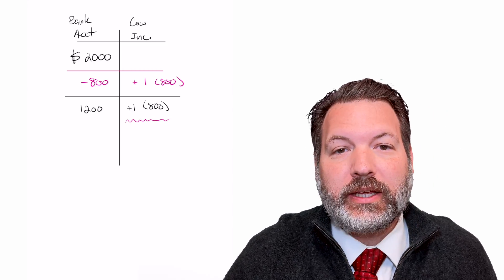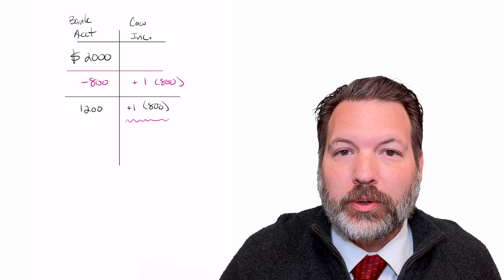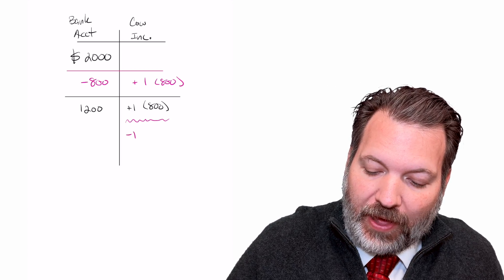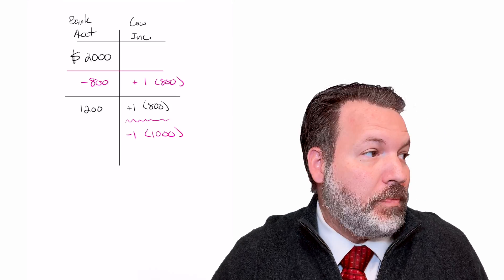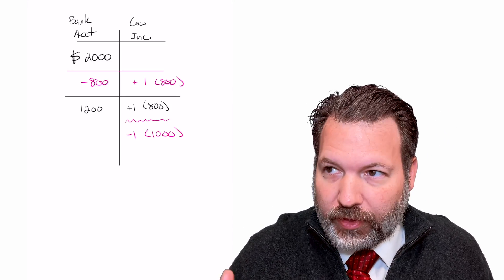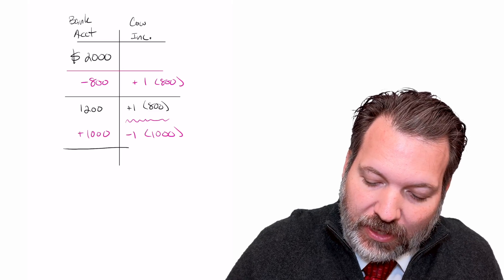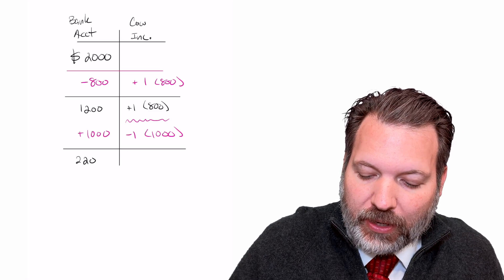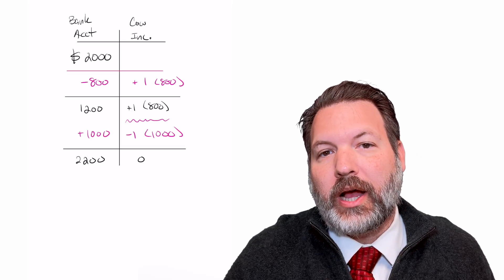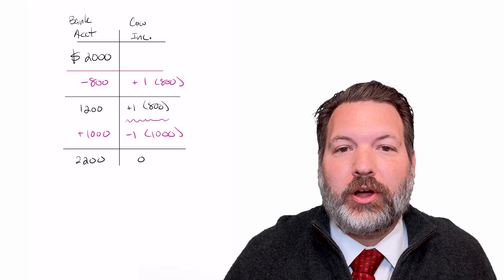Now, good news, our share in Cow Inc. does, in fact, appreciate. It goes up in value to $1,000. So we're going to sell that one share, thinking maybe we're calling the top of the cow market or something. And that's going to bring $1,000 back over to our cash side. And so our bank account now has $2,200, and we're back to no shares at all in Cow Inc.